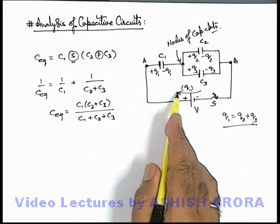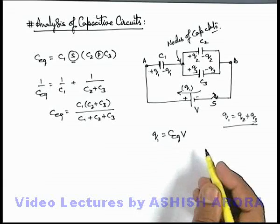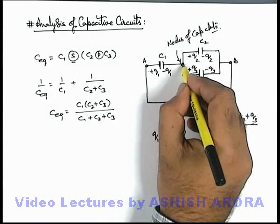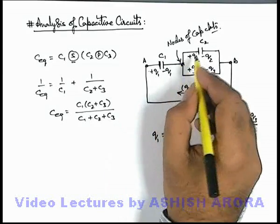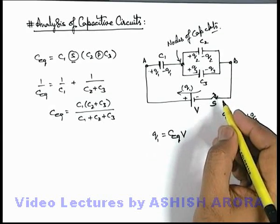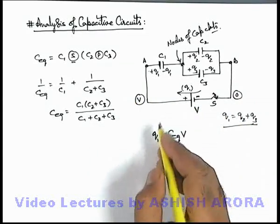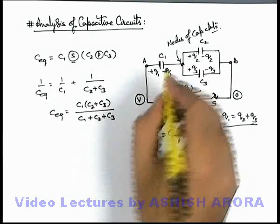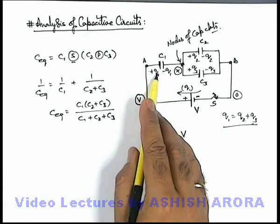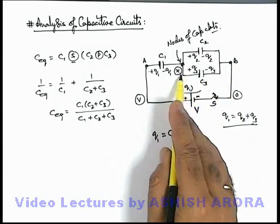The amount of charge supplied is Q1, so Q1 = C_eq × V. If we wish to calculate the individual charges Q1, Q2, and Q3, we need to calculate the potential at the junction of C1, C2, and C3 capacitors. As the battery maintains a potential difference V, we consider potential zero on the negative terminal and V on the positive terminal. If the potential at this node is x, then Q1 = C1(V - x), Q2 = C2 × x, and Q3 = C3 × x.